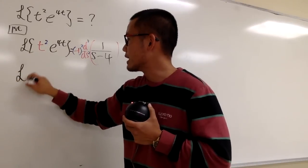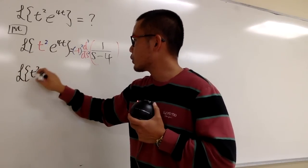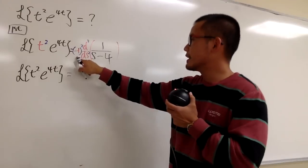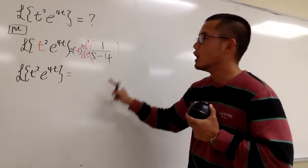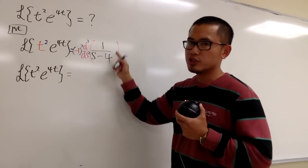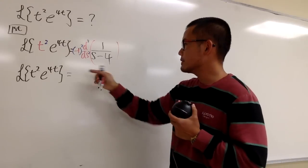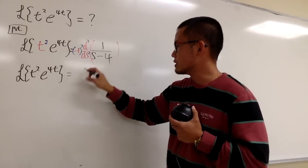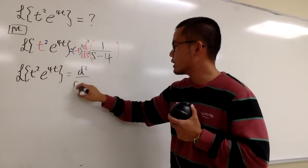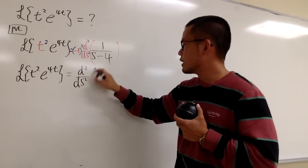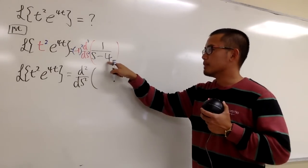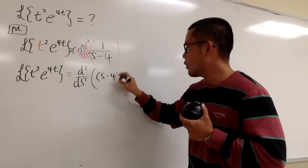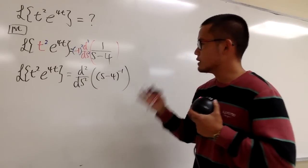This is the Laplace transform of t squared e to the 4t, which we know now, negative 1 squared, which is positive 1. We just have to go ahead and differentiate this twice. So, no more negative because negative 1 squared is positive, so this is just d2 over ds2. 1 over s minus 4, which you know, you can write it down as s minus 4 to the negative 1. So just like this.